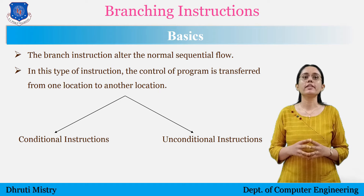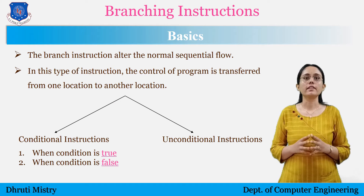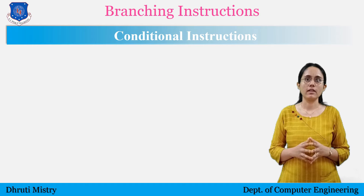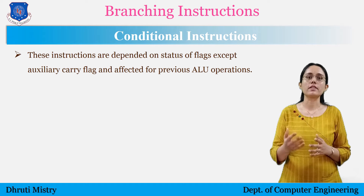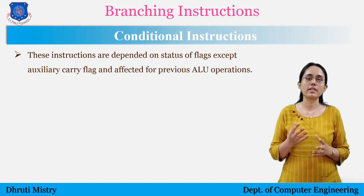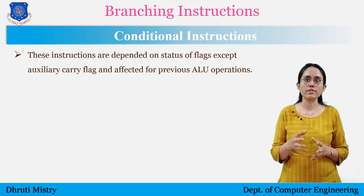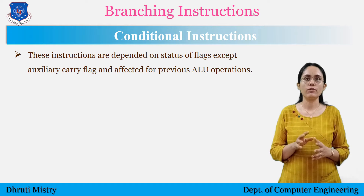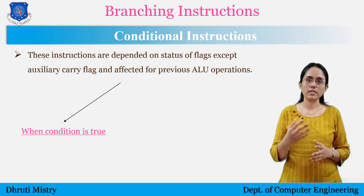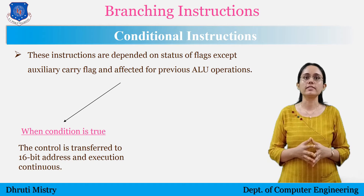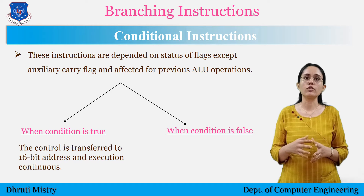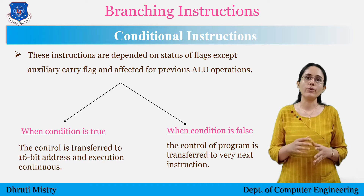There are two possibilities: true or false. In conditional branch instructions, these instructions are dependent on the status of flags, except auxiliary carry, and are affected by previous ALU operations. When the status of the flag is checked, two possibilities are there — true or false. When condition is true, the control is transferred to a 16-bit address and execution continues. And when condition is false, the control of the program is transferred to the very next instruction.